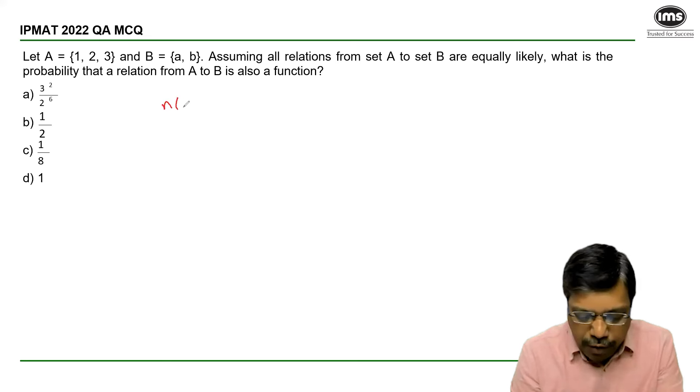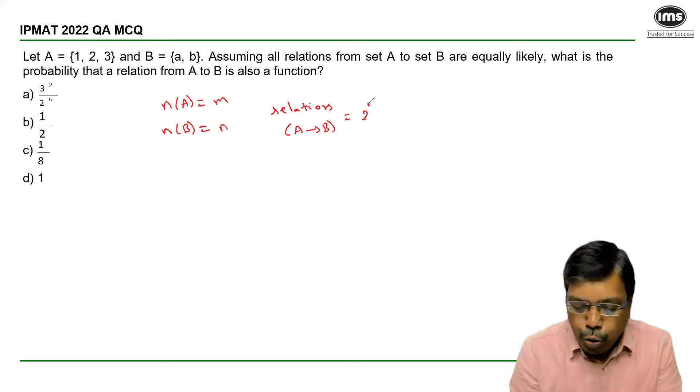Now if a set A has m elements and a set B has n elements, then the number of relations possible from A to B is 2 power m into n.